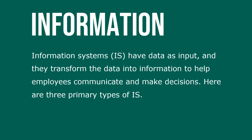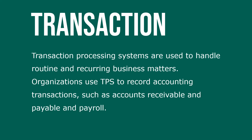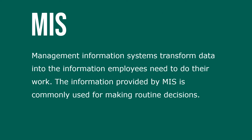There are three primary types of information systems. Transaction processing systems are used to handle routine and reoccurring business matters. Organizations use TPS to record accounting transactions such as accounts receivable and accounts payable, or payroll. Management information systems transform data into information employees need to do their jobs. The information provided by MIS is commonly used for making routine decisions.